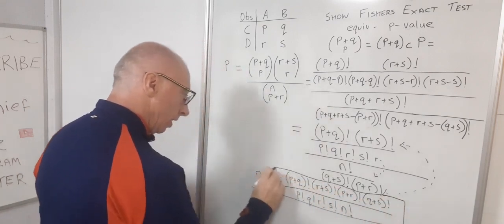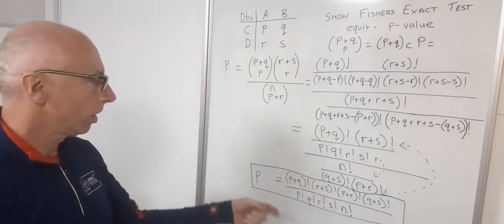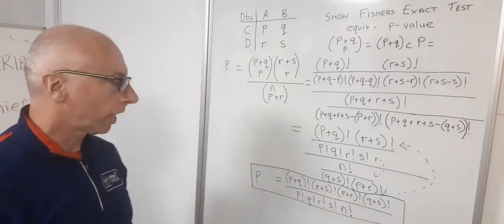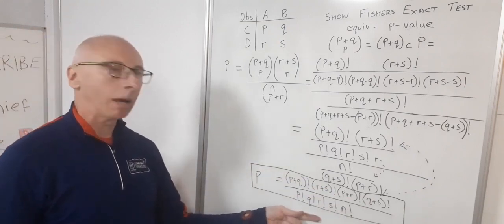Now obviously if you're going to use really big numbers in this table, like in the hundreds, this is going to make things very difficult to calculate. But for reasonably small values, this is a great way of working out the P value.